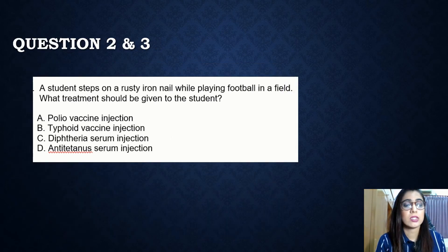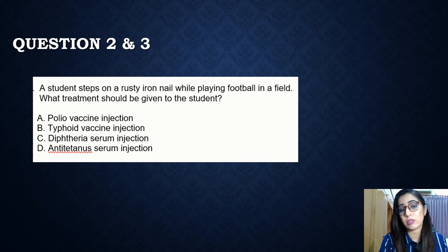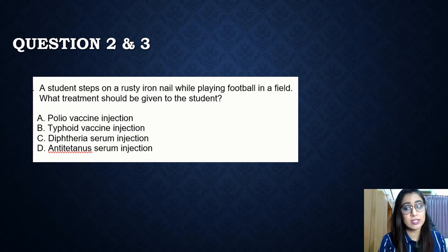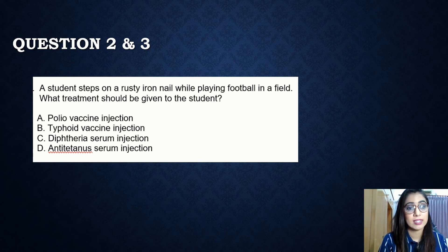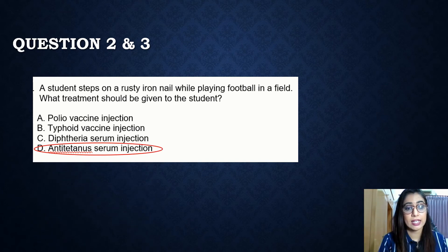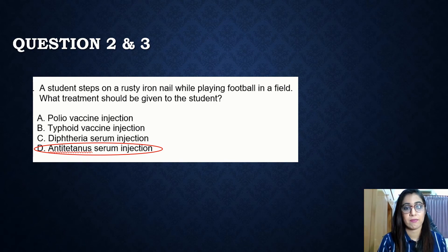Question two: a student steps on a rusty nail while playing football. What treatment should be given? A rusty nail can cause tetanus infection, so the answer is: an anti-tetanus serum injection should be given.